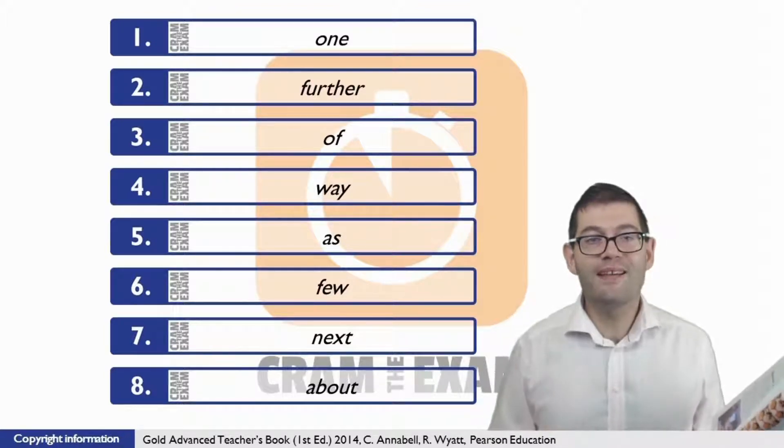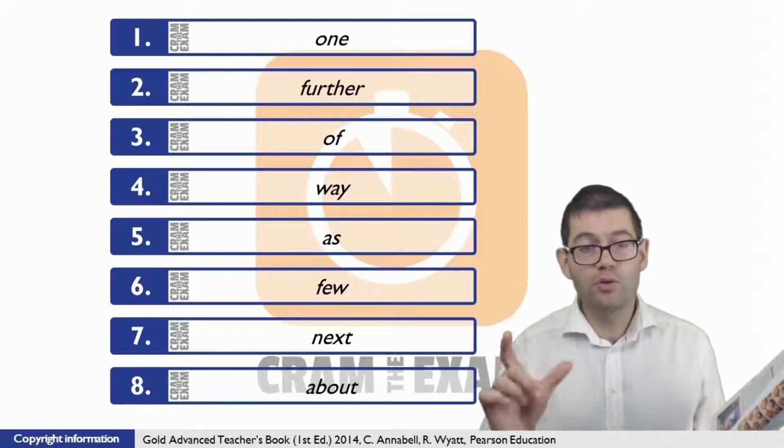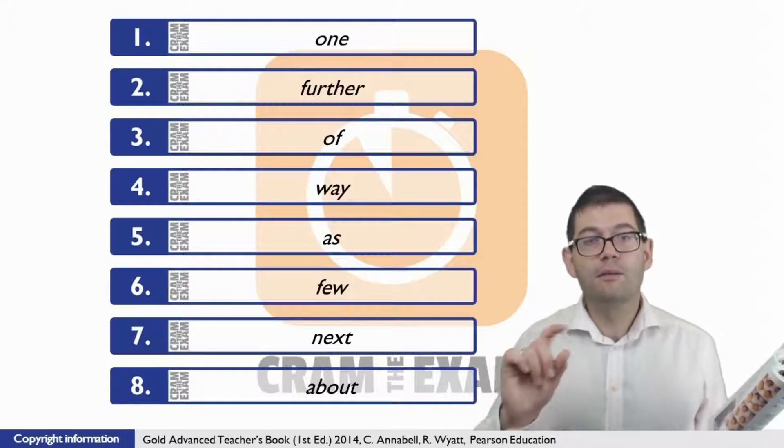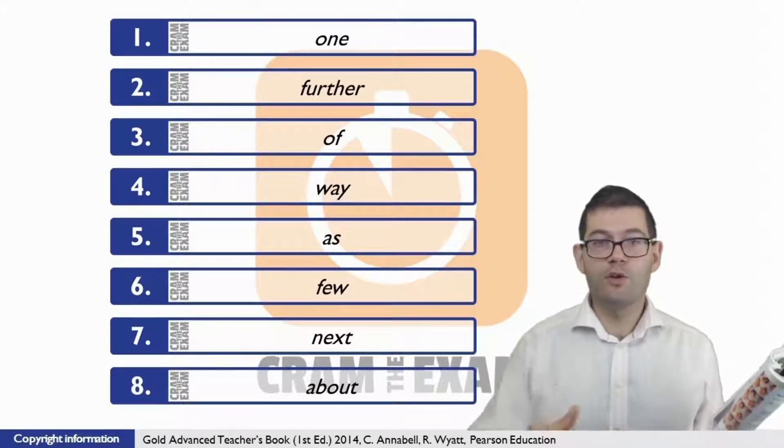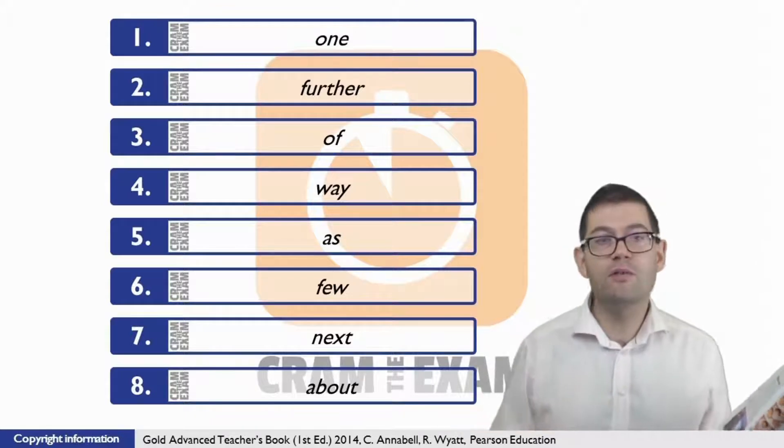For question number three, all we need here is the preposition to fill in the short little phrase 'a matter' plus preposition. The preposition is 'of.' So it could be 'a matter of seconds,' 'a matter of hours,' 'a matter of days' - whatever it is, it's 'a matter of.'